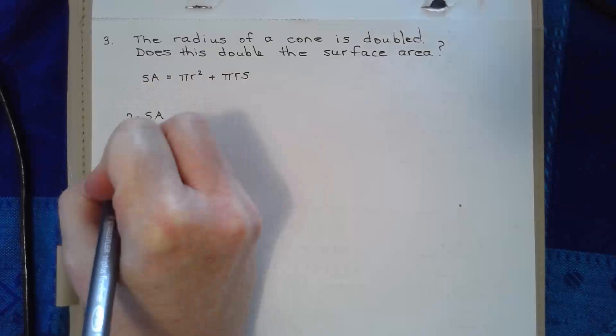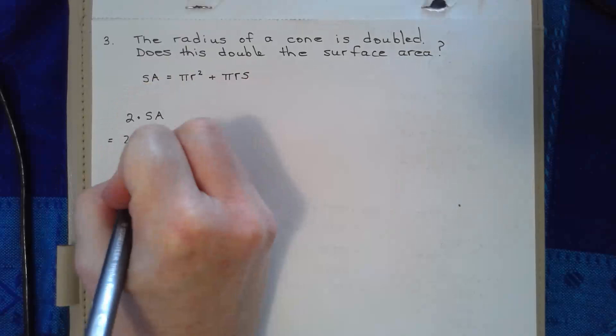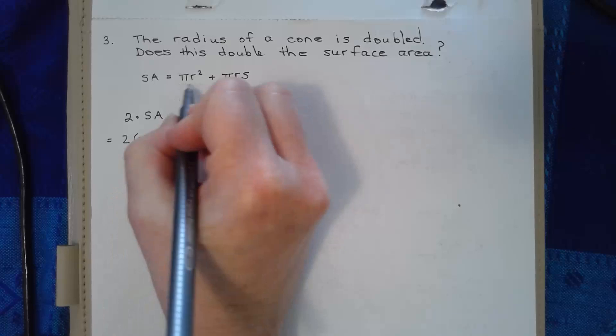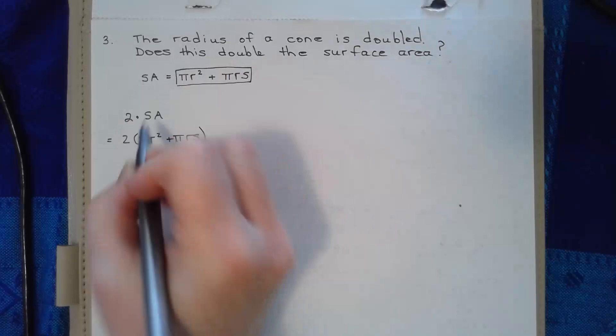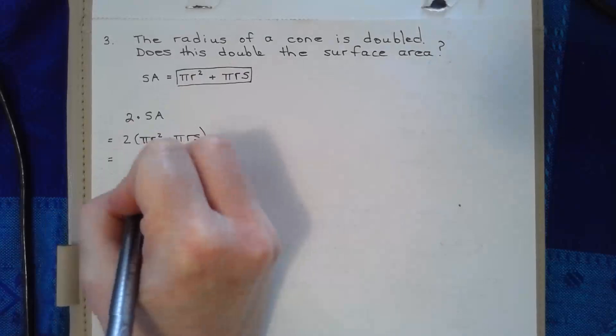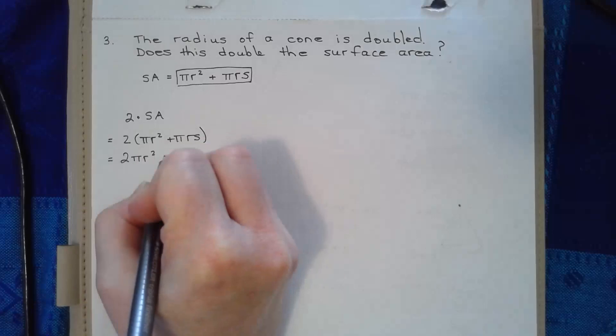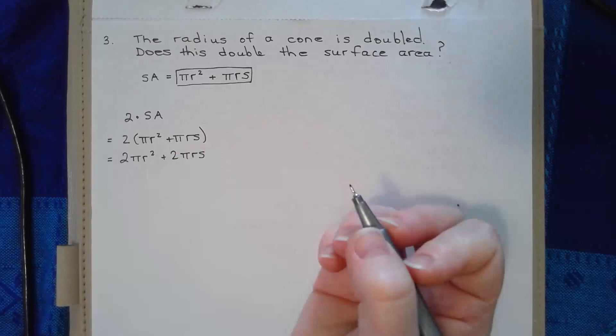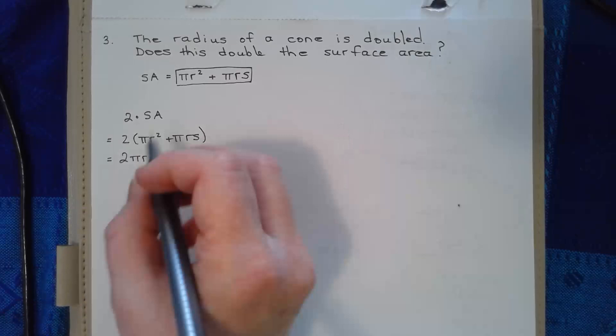That's equal to two, and I know that my surface area is pi r squared plus pi r s. So all I'm doing is substituting pi r squared plus pi r s in place of surface area. So now I want to go ahead and bring the two into the bracket. So I get two pi r squared plus two pi r s. So that's what my double surface area would look like.